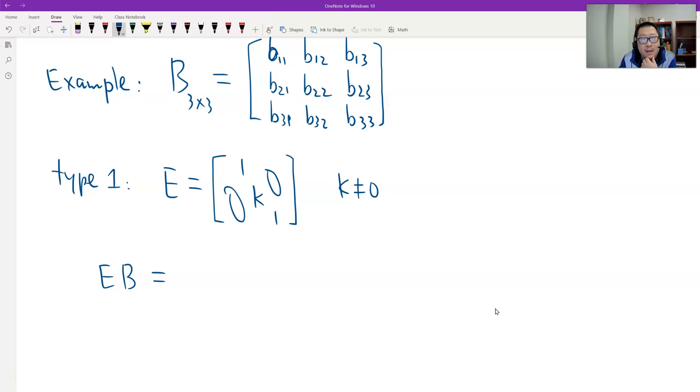It's easy. Left multiply should give the same type of row operation, which means multiply the number k to the second row of matrix B. Therefore, we should get this: k*B21, k*B22, k*B23. Keep the same.